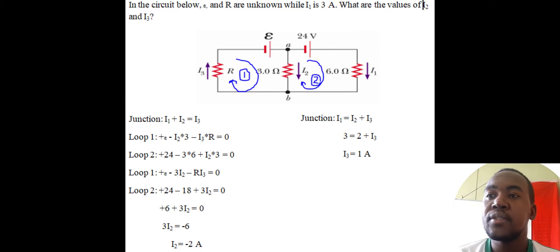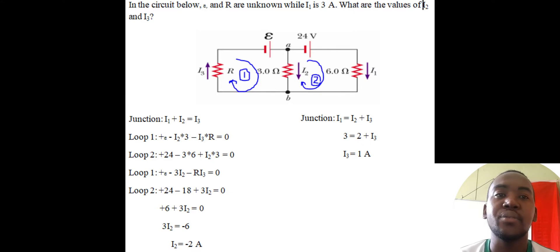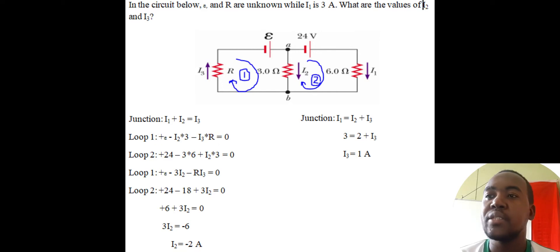For loop 2, also clockwise, the battery EMF is positive 24V. The loop goes down through the 6-ohm resistor with current I1 also going down — so that's negative 6·I1, which is negative 18. Then it goes up through the 3-ohm resistor, but I2 is going down (opposite direction), so we add positive 3·I2, all equal to zero.